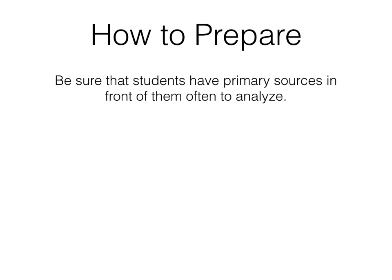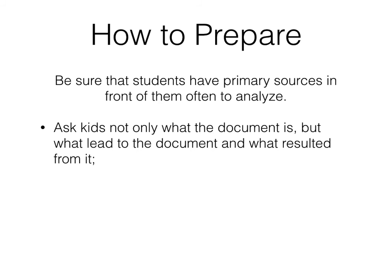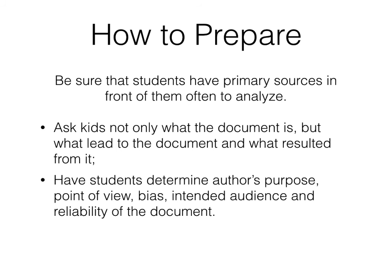Another way to prepare is to make sure that kids have primary sources in front of them as often as possible to analyze. We need to make sure kids not only know what the document is, but what led to that document and what resulted from it — again, going back to cause and effect. We also need to ensure students determine the author's purpose, point of view, bias, intended audience, and reliability of the document.